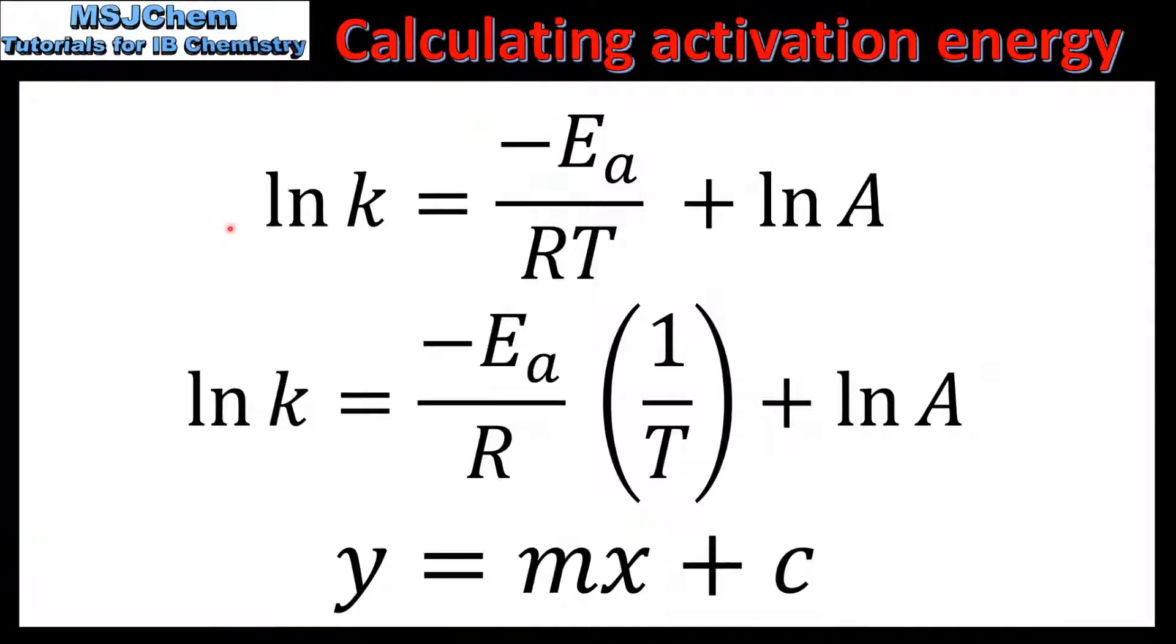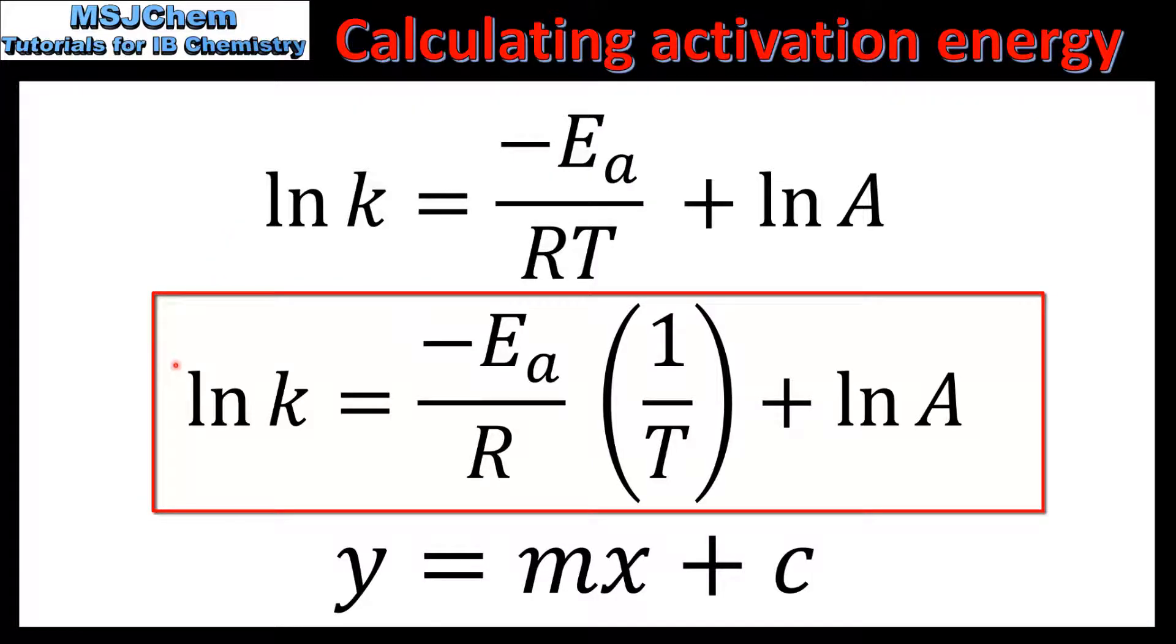Next we rearrange this equation to give us the equation for a straight line, where M which is the gradient is negative E_a over R, and C which is the y-intercept is the natural log of A.